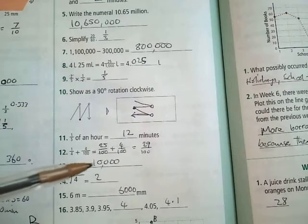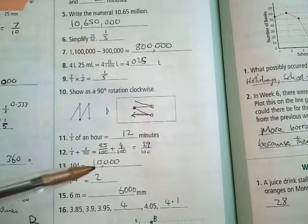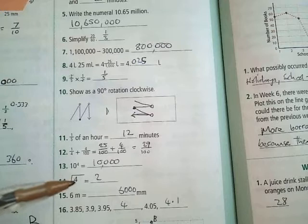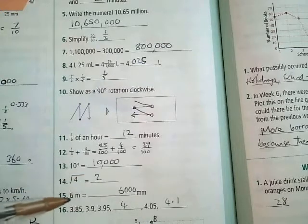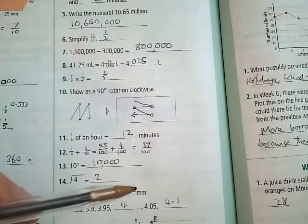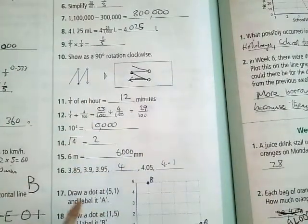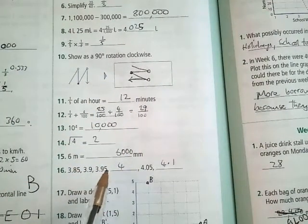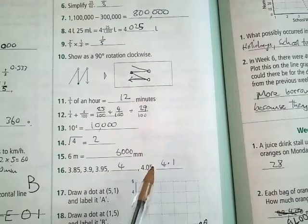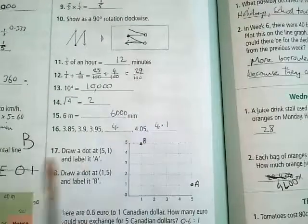Question number 13: 10 to the power of 4 is the 1 with 4 zeros, 10,000. The square root of 4 is 2. 6 meters is 6,000 millimeters, sorry. Question 16: 3.85, 3.9, 3.95, 4, 4.05, 4.1.